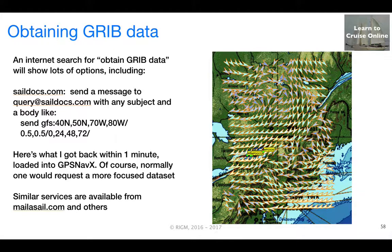You can get GRIB data in a variety of ways. For instance, if you send an email to query@saildocs.com with any subject and a body like what you see on the slide, you'll get a file back within a short period of time. When I loaded that file into GPSNavX, I can see all the wind vectors displayed on the chart that you see on the right.